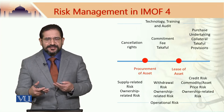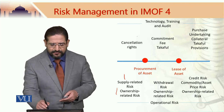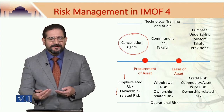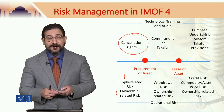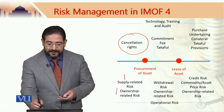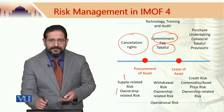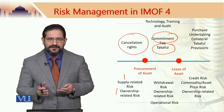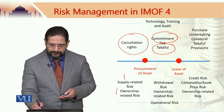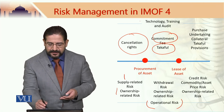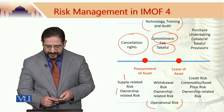What are the remedial measures for supply-related risk and ownership-related risk? Cancellation rights, if they can be negotiated by the bank from the vendors, are a good risk mitigation tool. A commitment fee is always a good idea. During the lease period, cash collateral would give a lot of comfort to the bank. For operational risk, technology, training, and audit are good risk-mitigating factors.